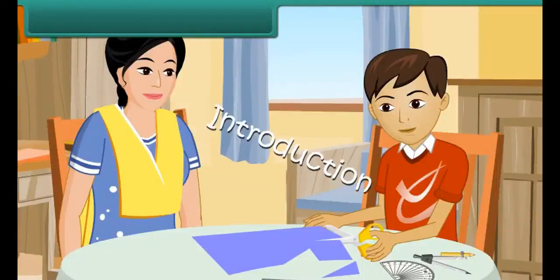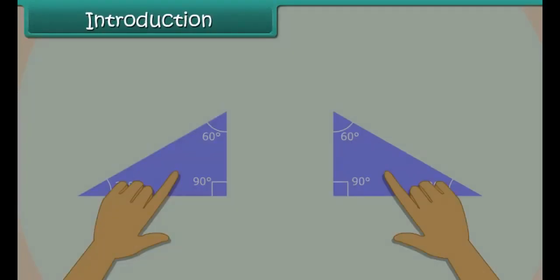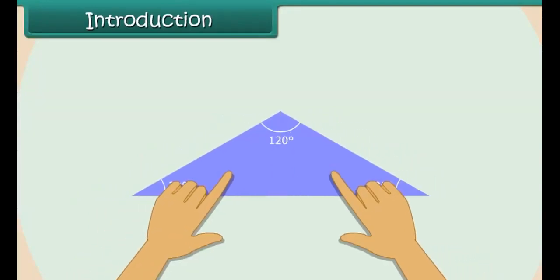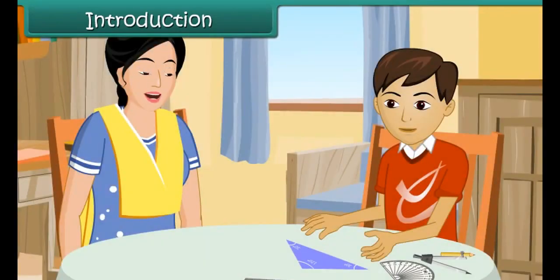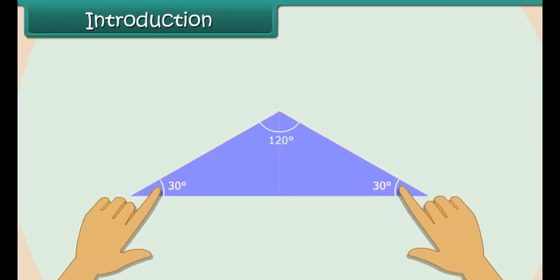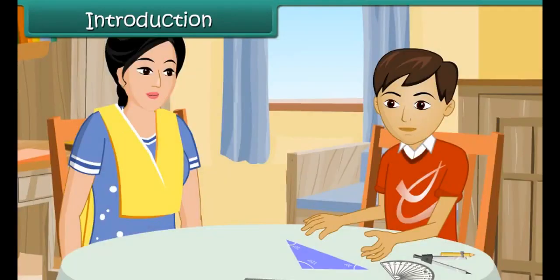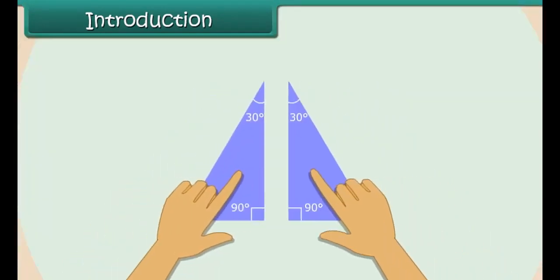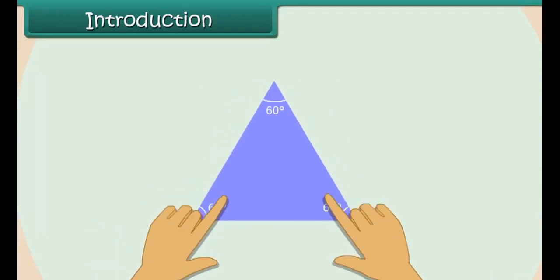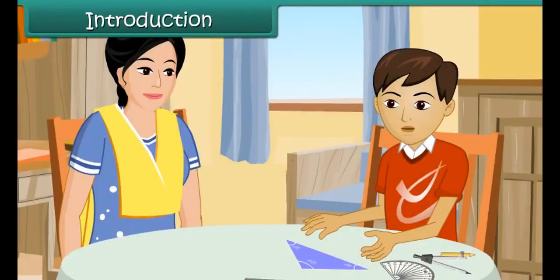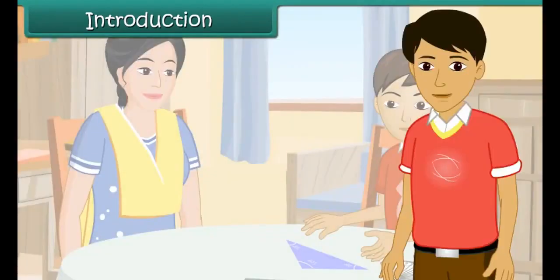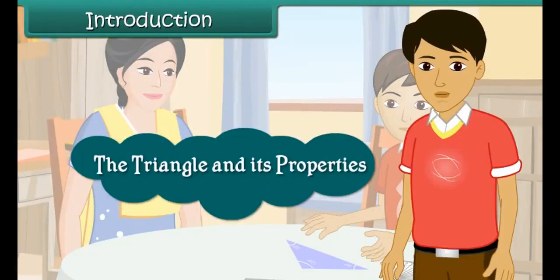Mom, look! I made a new triangle by joining two identical right-angled triangles. That's great Nick, did you observe the sides and angles of the new triangle? Yes mom, two sides and two angles are equal. Wonderful! Now join two right-angled triangles to create a new triangle with all sides and all angles equal. I have done that as well mom. In this lesson you will learn about the triangle and its properties.